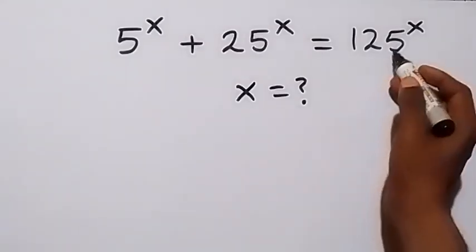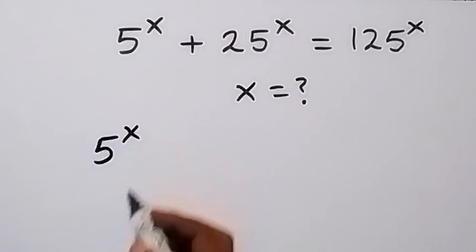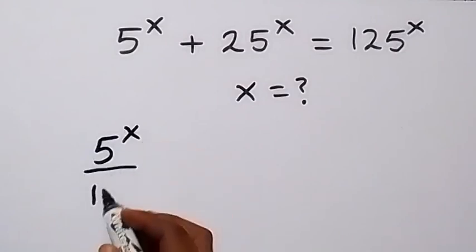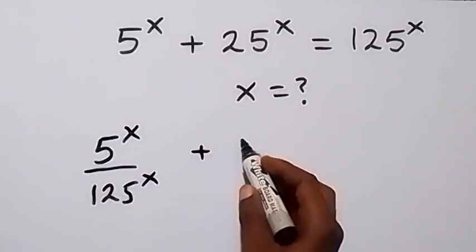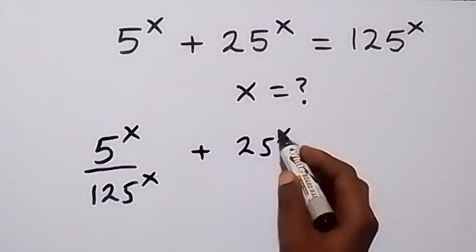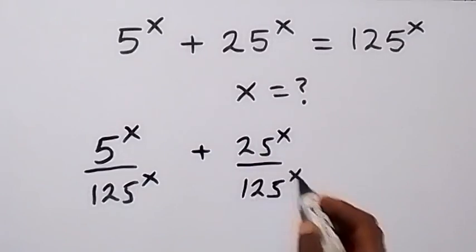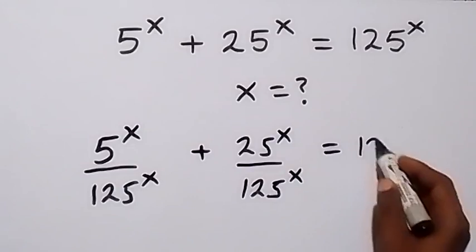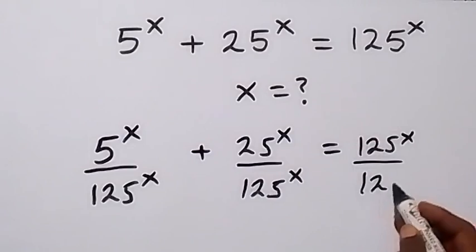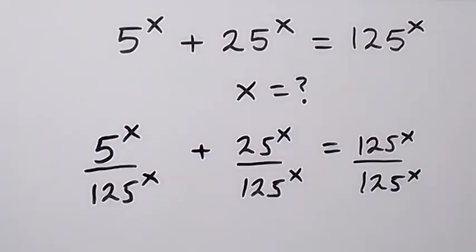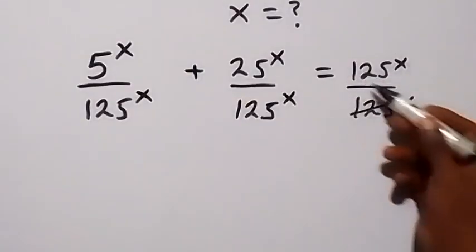Here, let's divide through by 125 raised to the power x. So this becomes 5 raised to the power x divided by 125 raised to the power x, then plus 25 raised to the power x divided by 125 raised to the power x, and that equals 125 raised to the power x over 125 raised to the power x. So from here these cancel out and we have one left here.